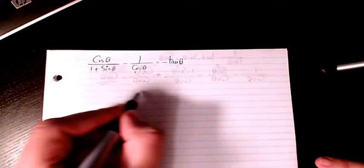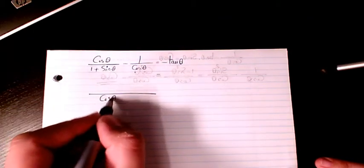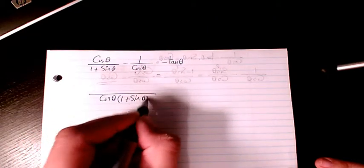So what I'm gonna do is find a common denominator, which is gonna be cosine theta times 1 plus sine theta.